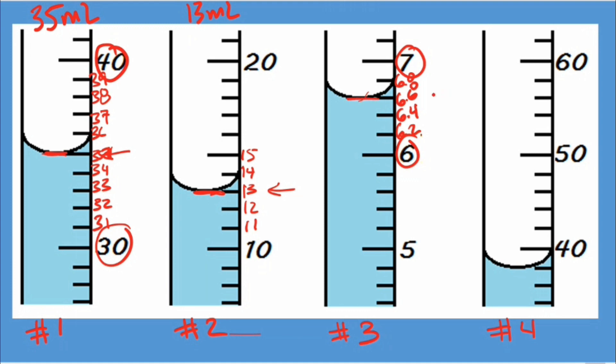And our last graduated cylinder, number four. Again, the numbering systems change a little bit. If you look at this example, I know it's above the water line. It goes from 40 to 50. Each little line is worth two: 44, 46, 48. So if we go downward, we go down by two. Our answer is 38 milliliters.